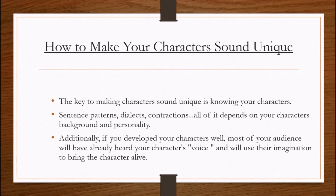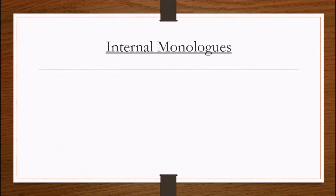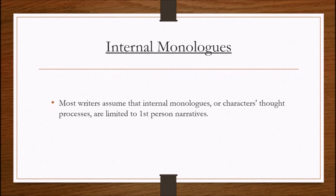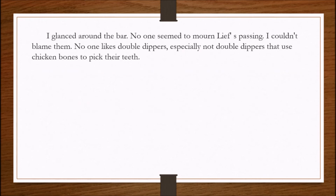Think about when you read your favorite books. As you read dialogue lines, notice the inflection and tone your mind adds to each character's speech. Internal monologues. Most writers assume that internal monologues, or a character's thought process, are limited to first-person narratives. This is not the case. A character's ruminations can be displayed with ease through any viewpoint. The difference between first, second, and third person is simply the use of 'I' and 'you.' Here is an example of an internal monologue written in the first person: 'I glanced around the bar. No one seemed to mourn Leaf's passing. I couldn't blame them. No one likes double dippers, especially not double dippers that use chicken bones to pick their teeth.'